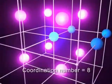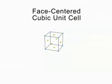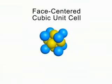The face-centered cubic unit cell has a particle at each corner and in each face, which are colored yellow here, but none in the center.